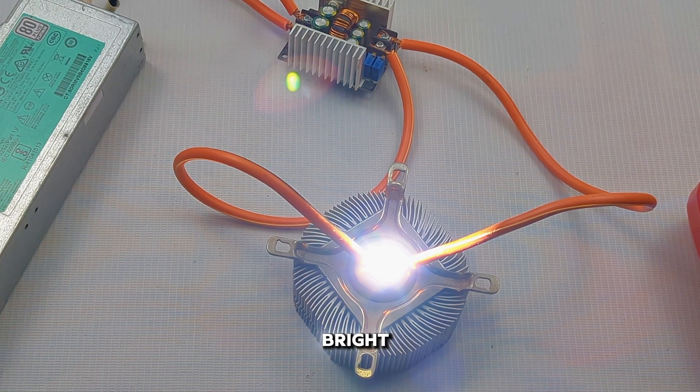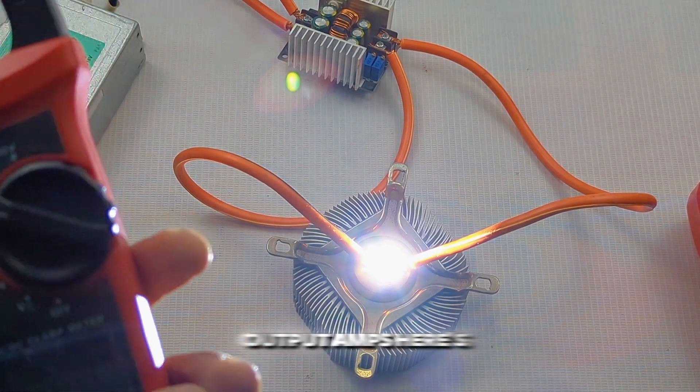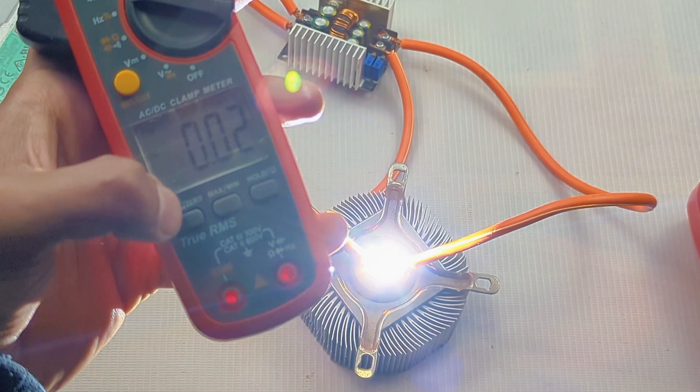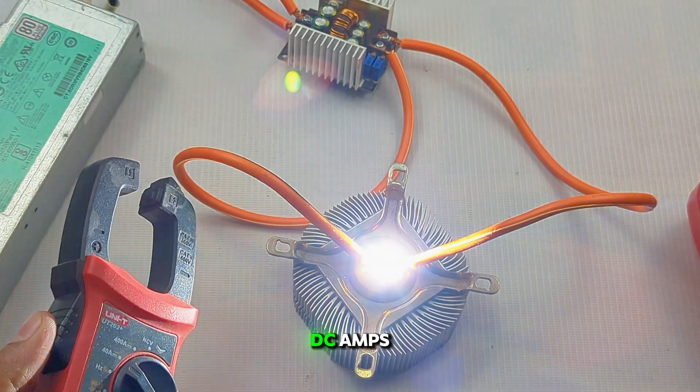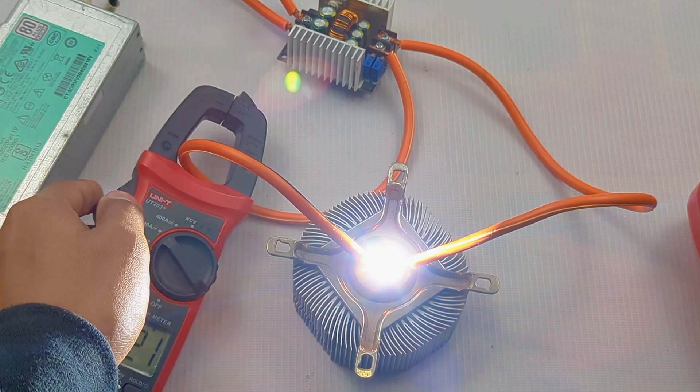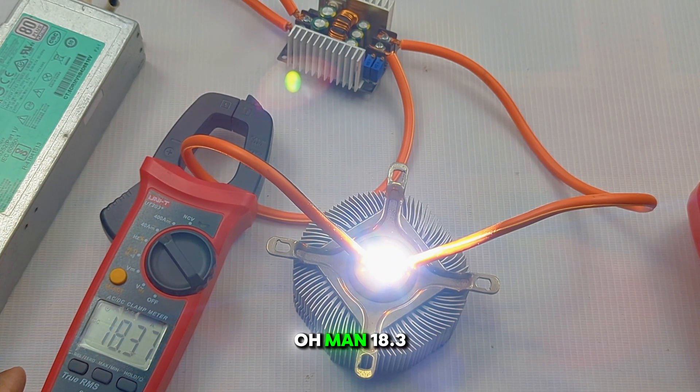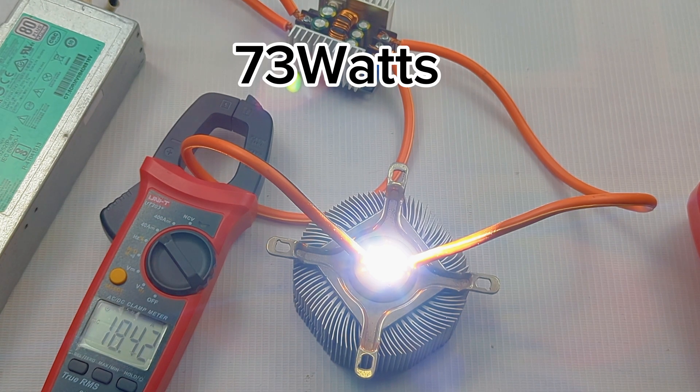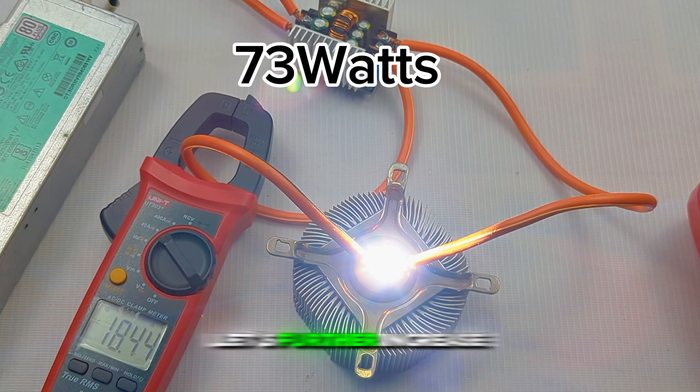It's super bright. Let's measure the output amps with the clamp meter on DC amps. Oh man, 18.3 amps at 4 volts - more than 64 watts of power. Let's further increase the amperes.